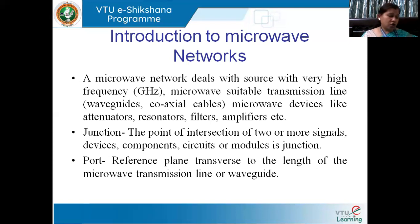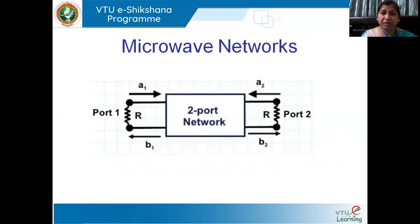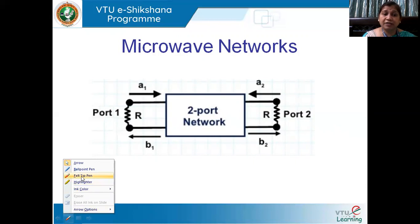These are the things used in a microwave network. Now, what is the difference between a microwave network and a normal network? In a normal network, we have voltage and current at input and output ports. But in a microwave network, it is not associated with voltage and current — rather, it is associated with waves.